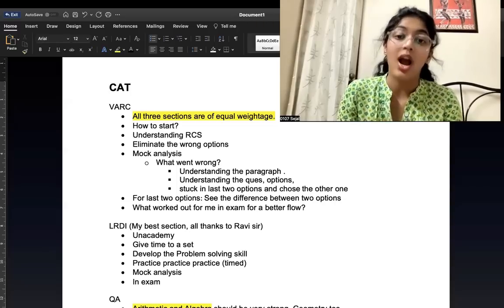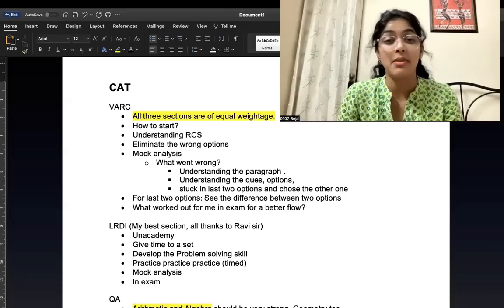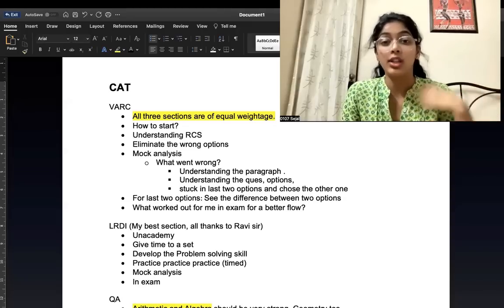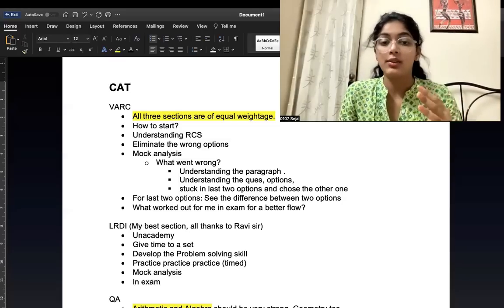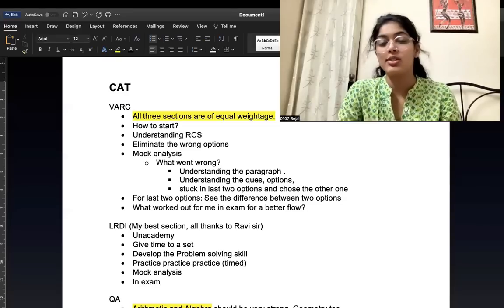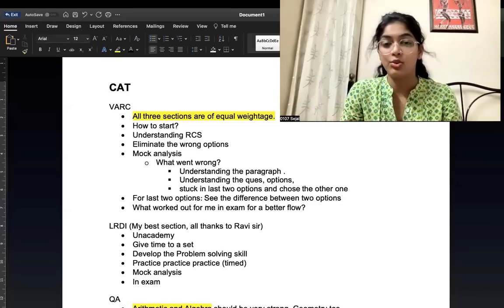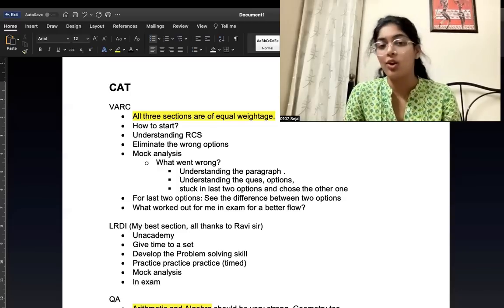You need to see what went wrong, where did you make the mistake. In understanding the paragraph, you didn't understand the paragraph, or you understood it in the wrong way. Understanding the questions or options. And the third one is, you were stuck in the last two options. Like there were four options, but I was stuck. I eliminated first two, but C and D were left and I chose the wrong one. It is very common.